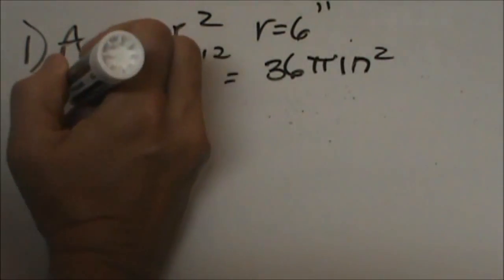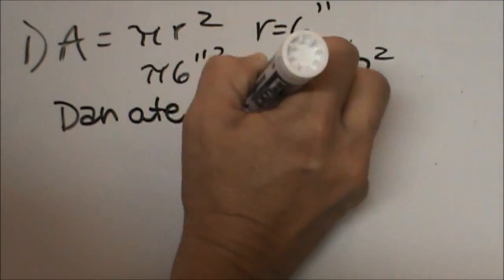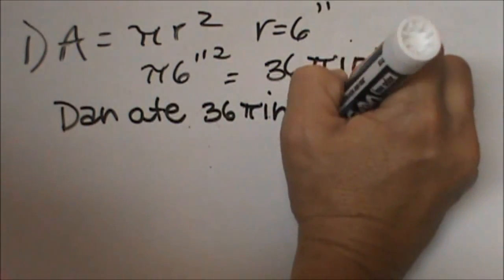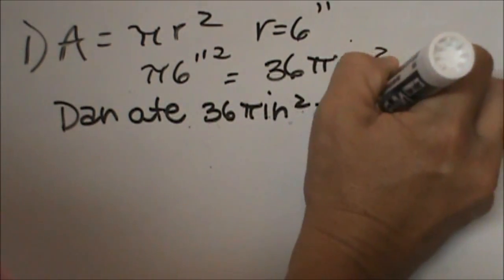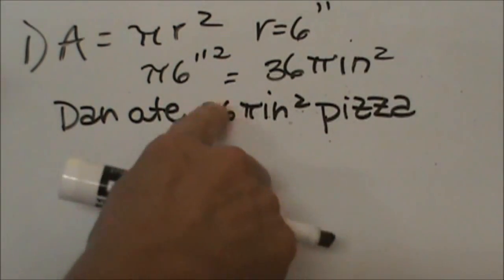And you can write that in a full sentence. Dan ate 36 pi inches squared pizza. You can also multiply 36 times pi and actually get the number, or get an estimated value without the pi in there.